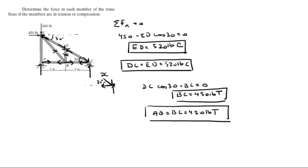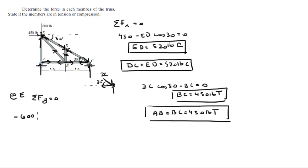So this one can have a reaction going up. If you look back at joint E, you know that the sum of the forces in the Y-direction has to be equal to 0. If the sum of the forces in the Y is equal to 0, then we can assume that this one is going up — not necessarily going up, but we are going to assume it is going up for now. So: negative 600 plus AE plus ED sine of 30 is equal to 0.